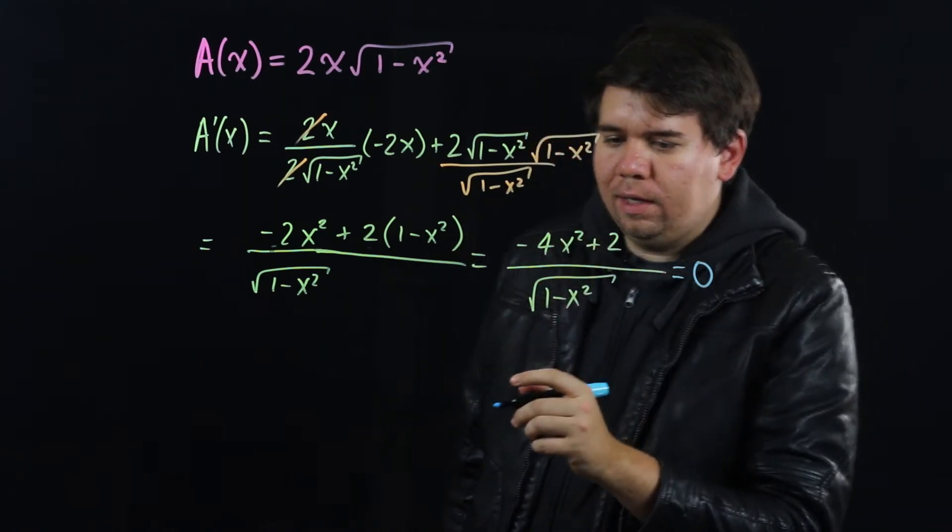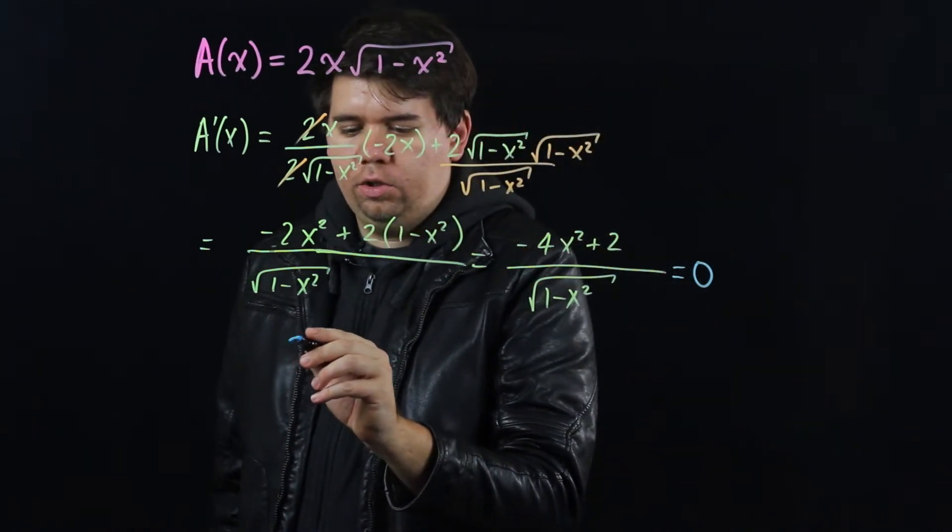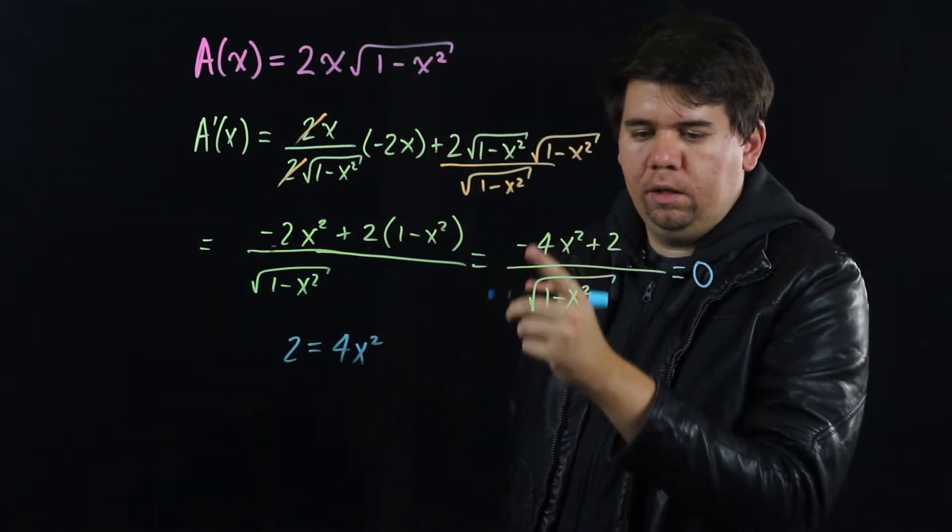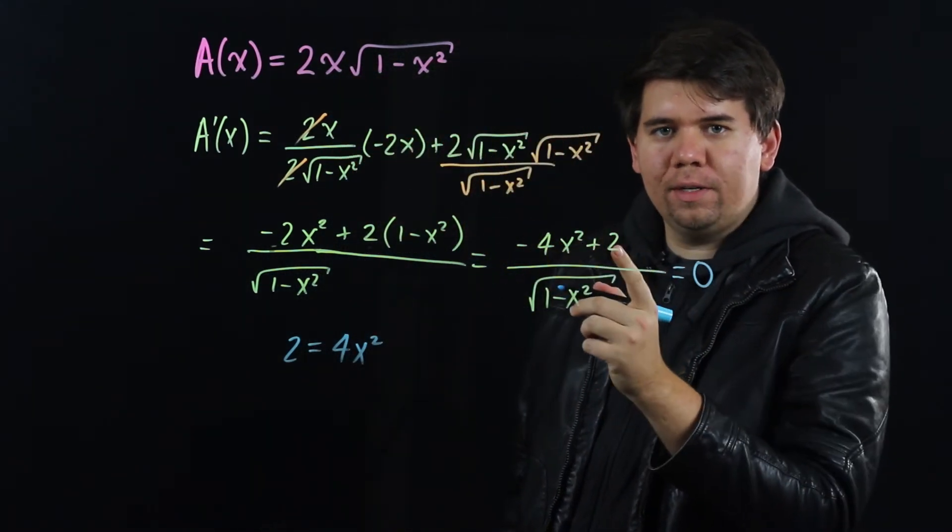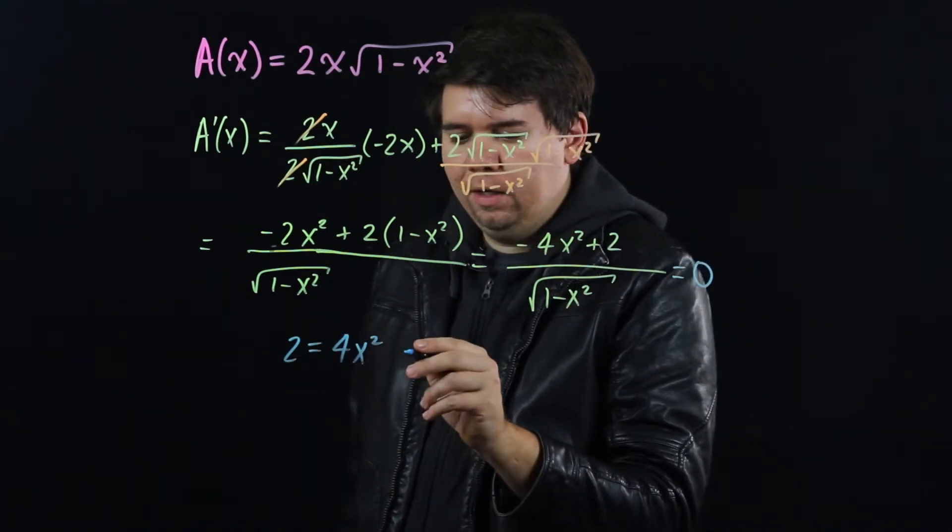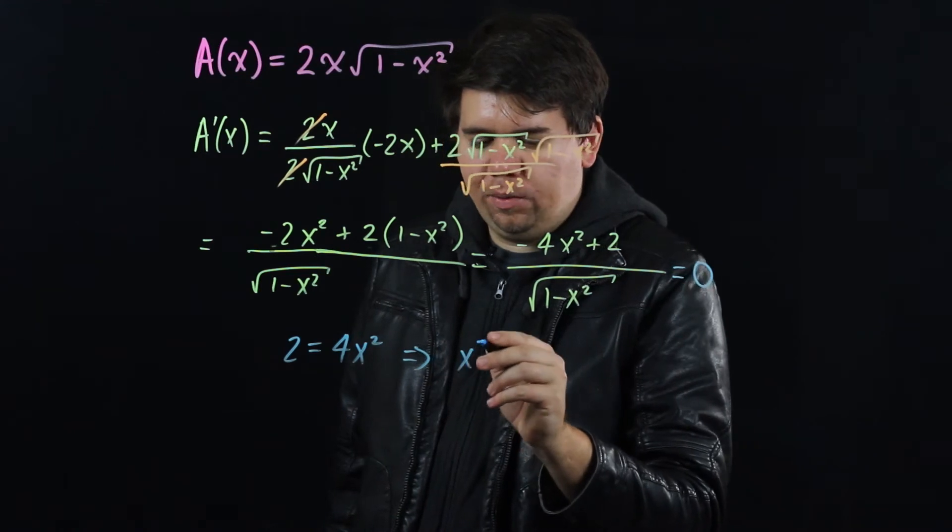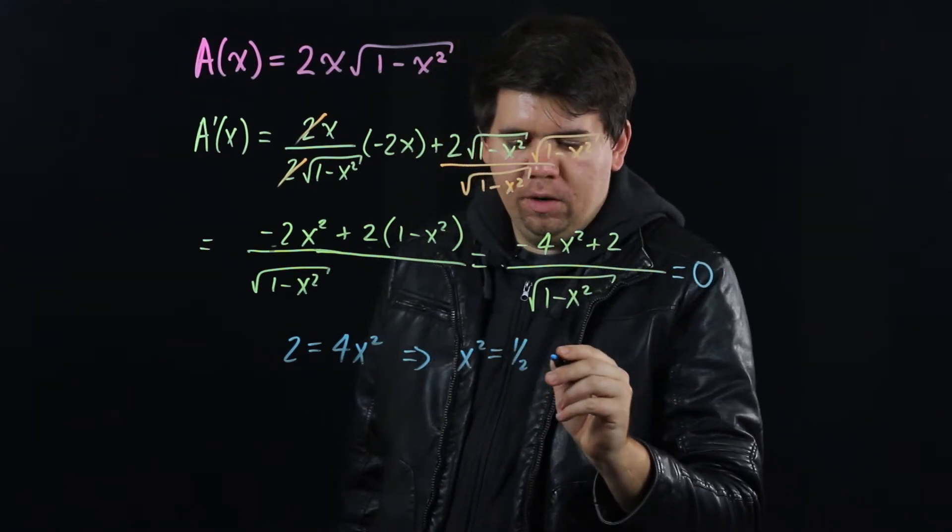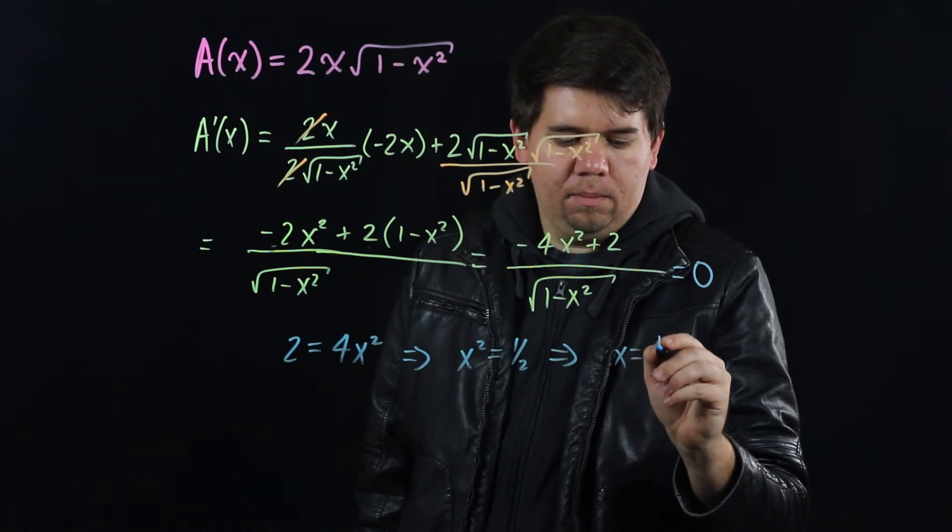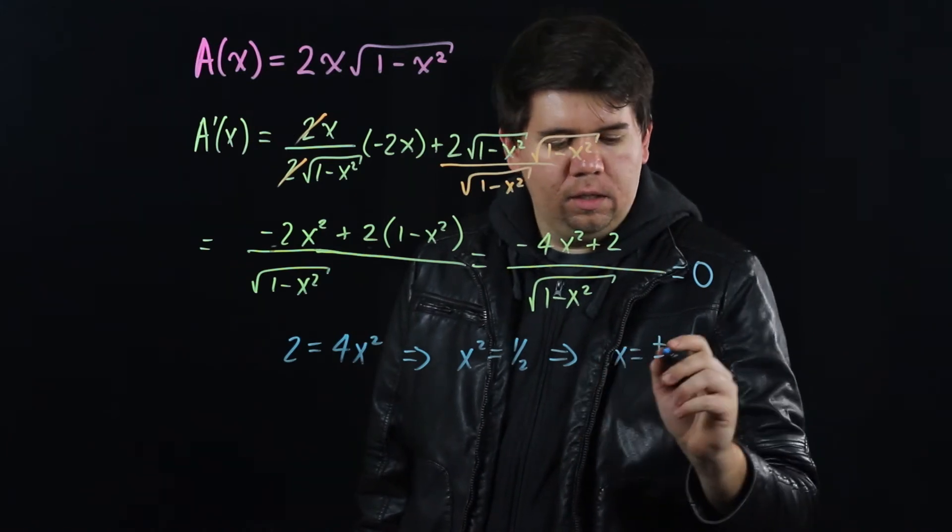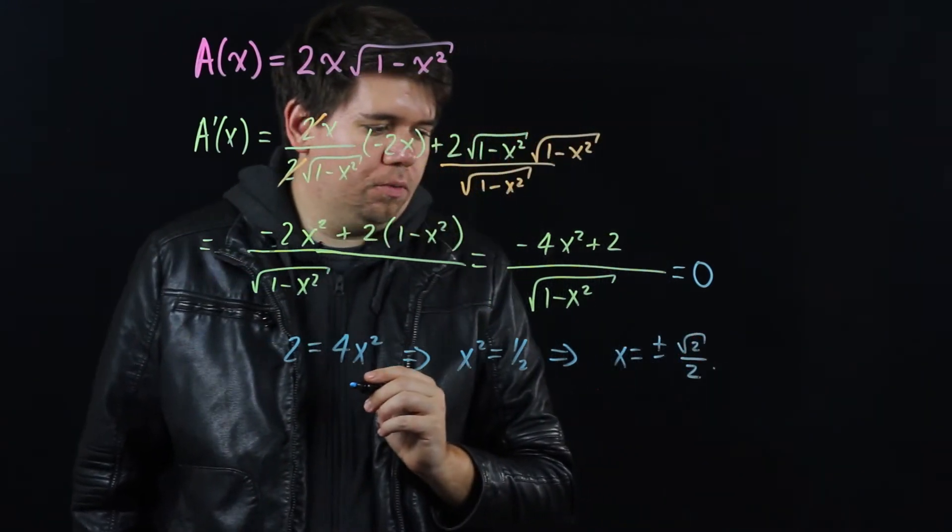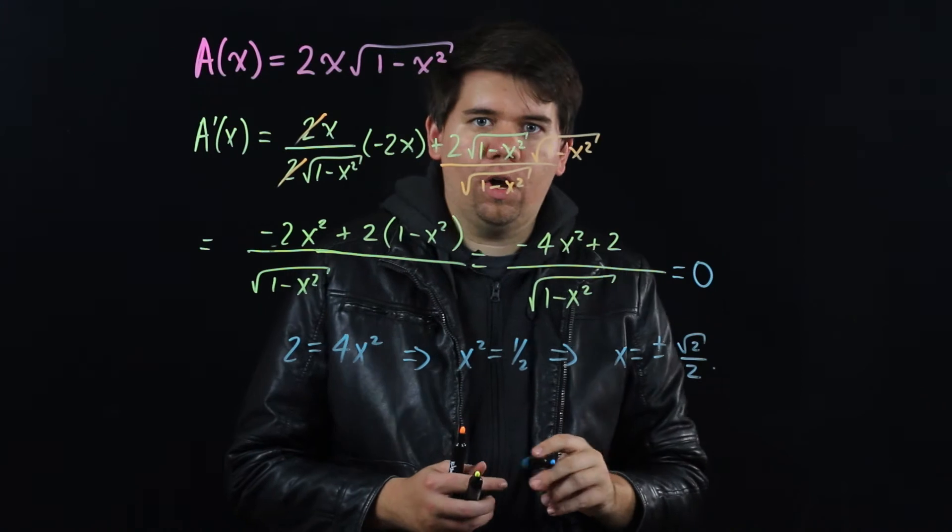Setting this equal to 0, I get 2 = 4x². The fraction is 0 when the top of it is 0, so the top of it is 0 when 2 is 4x², which gives me that x² is 1/2, or in particular that our x is plus or minus the square root of 1/2, which is √2/2.